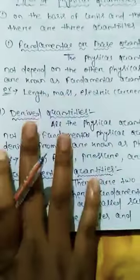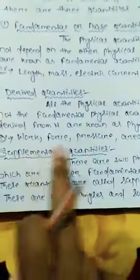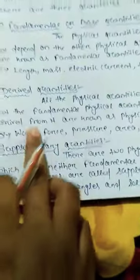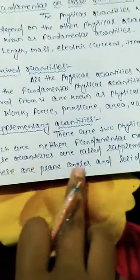Then the supplementary quantities. There are two physical quantities which are neither fundamental nor derived — they are called supplementary quantities. For example, there are plane angles and solid angles.